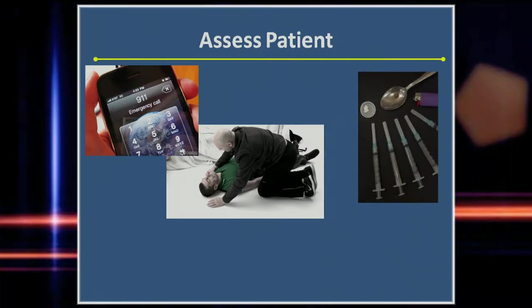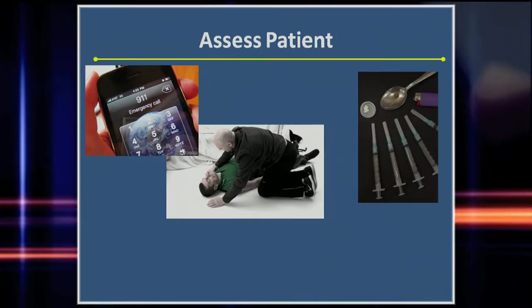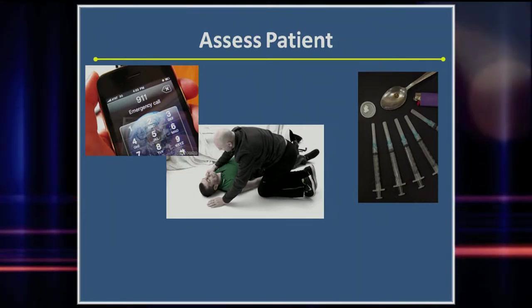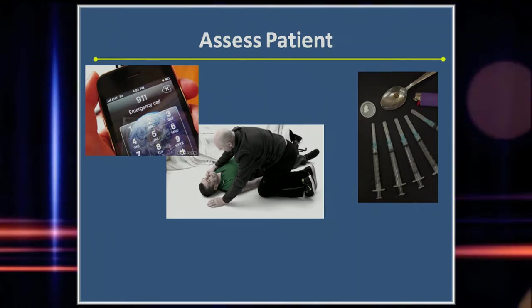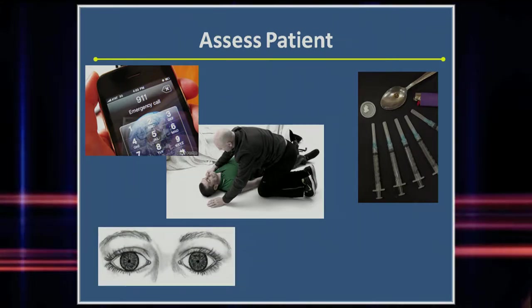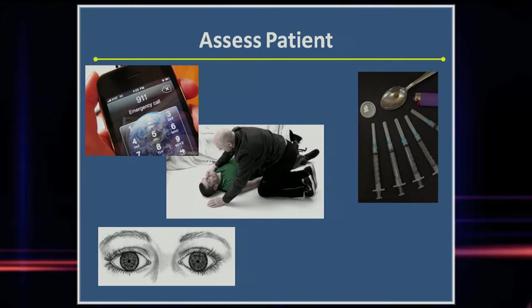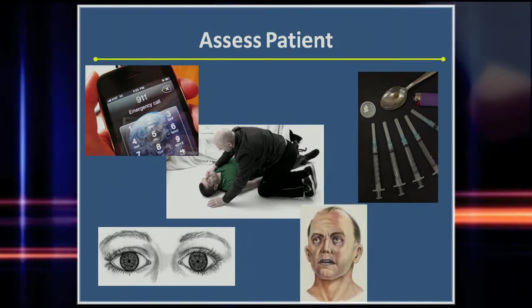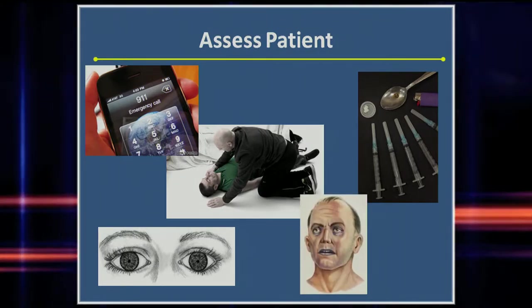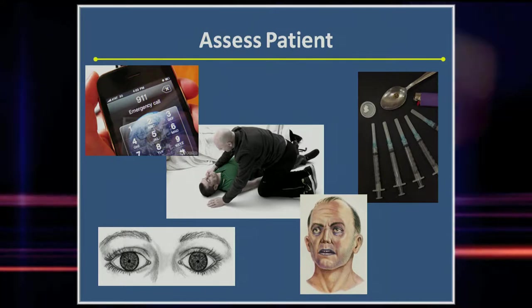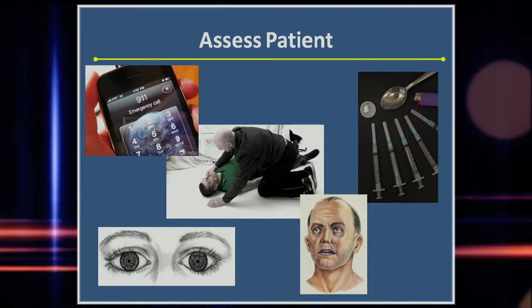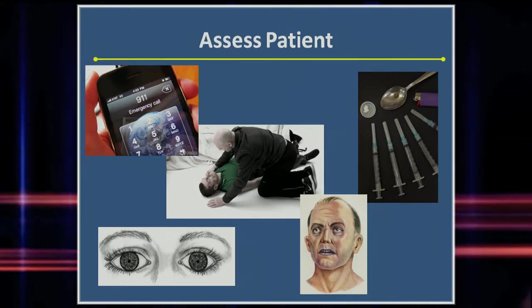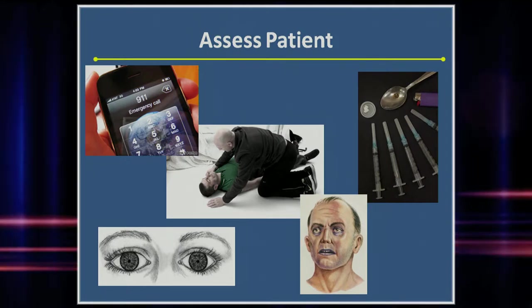Look for signs of an overdose, such as known drug use, paraphernalia like syringes or pill bottles, and clinical signs like decreased or absent breathing, small pinpoint pupils, and the bluish discoloration of the lips or nail beds. When in doubt, administer naloxone. It is safe and will not harm someone who hasn't overdosed.